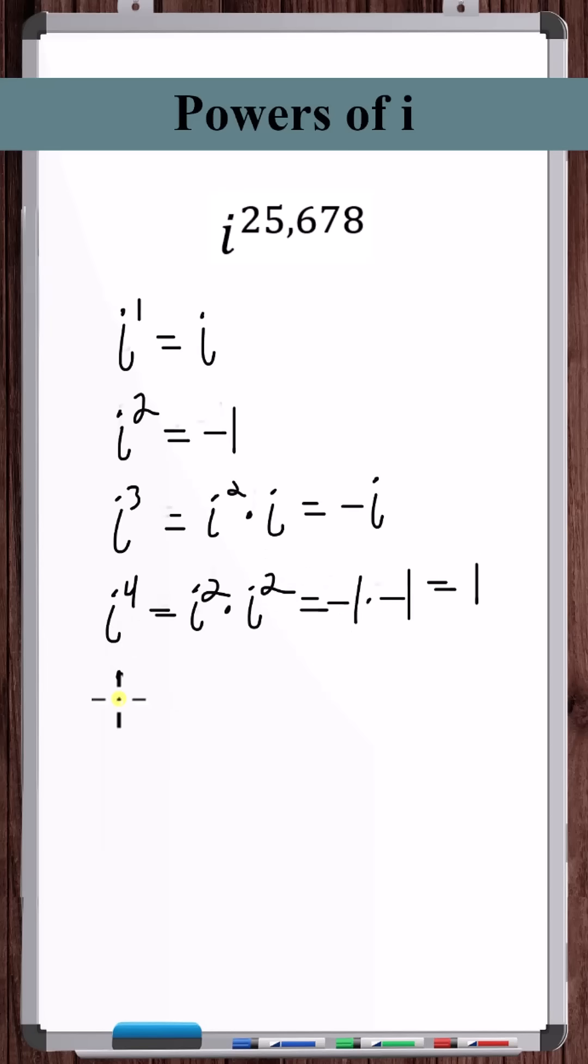And this pattern repeats over and over again as you continue to count up integer values all the way to infinity. And what we mainly take advantage of is the fact that if the exponent is divisible by 4, then i to that power is going to be equal to 1.